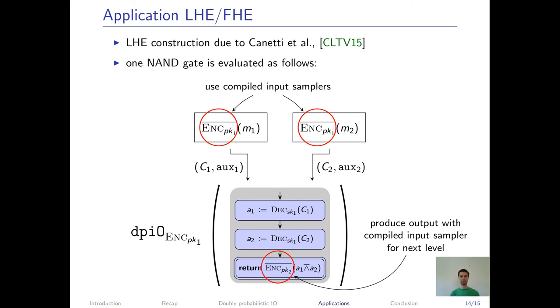And as a result, we obtain leveled homomorphic encryption from simply polynomial IO plus extremely lossy functions, which is still an exponential assumption, but the exponential loss is not relative to IO, the shaky assumption, but relative to DDH, a well-studied assumption.